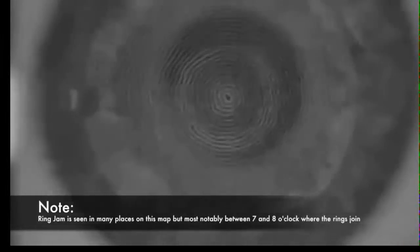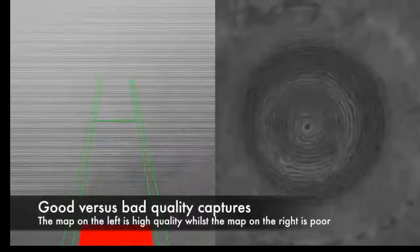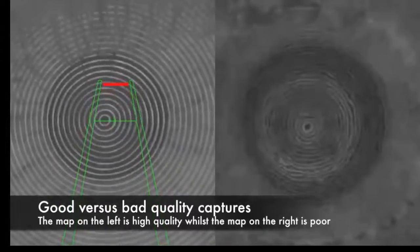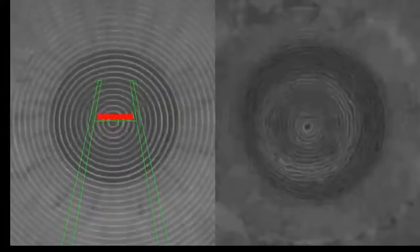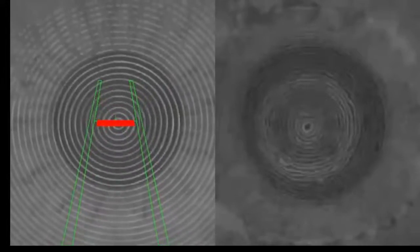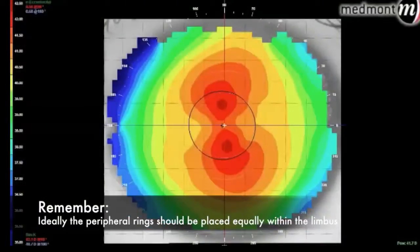However, in the second example, we see the mires are not intact and the Placido disk image shows ring jam. Both of these captures showed an accuracy in the top right-hand corner of 99%, yet the former will yield better quality data. Once we have achieved an ideal capture, we need to alter the colour scale to best match the data.